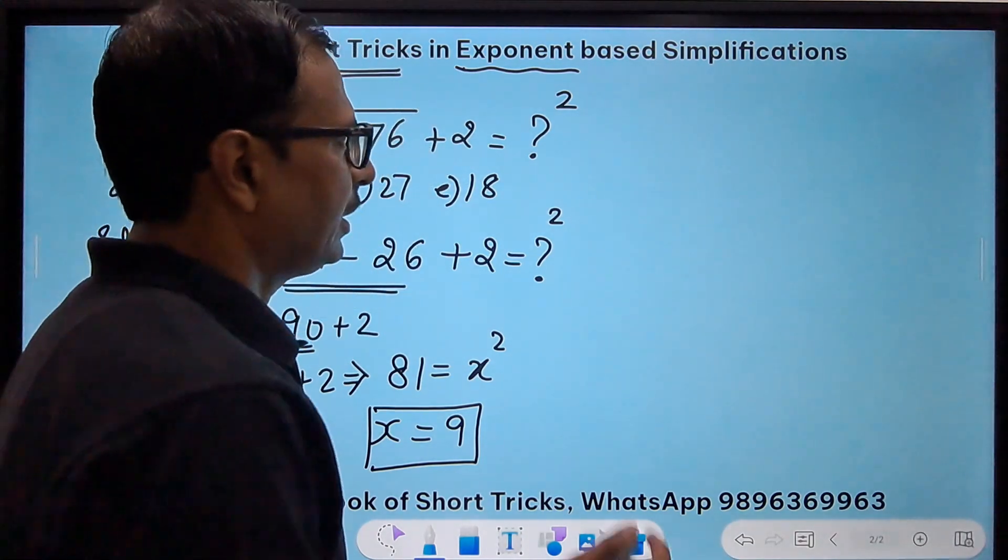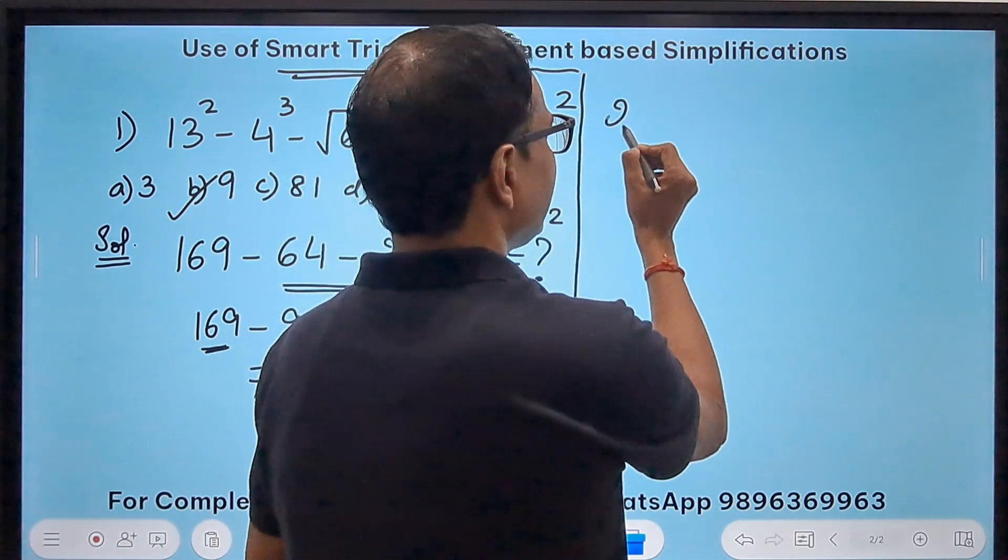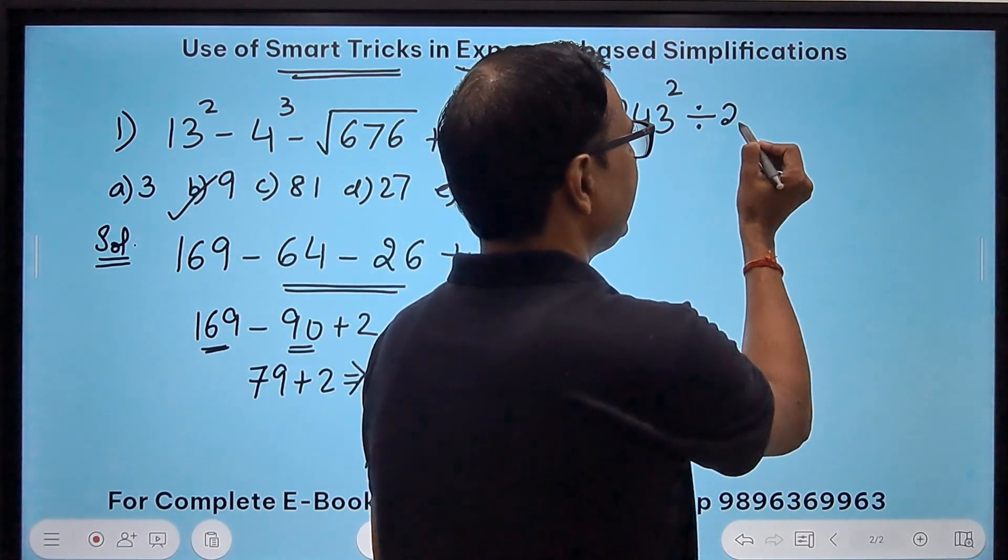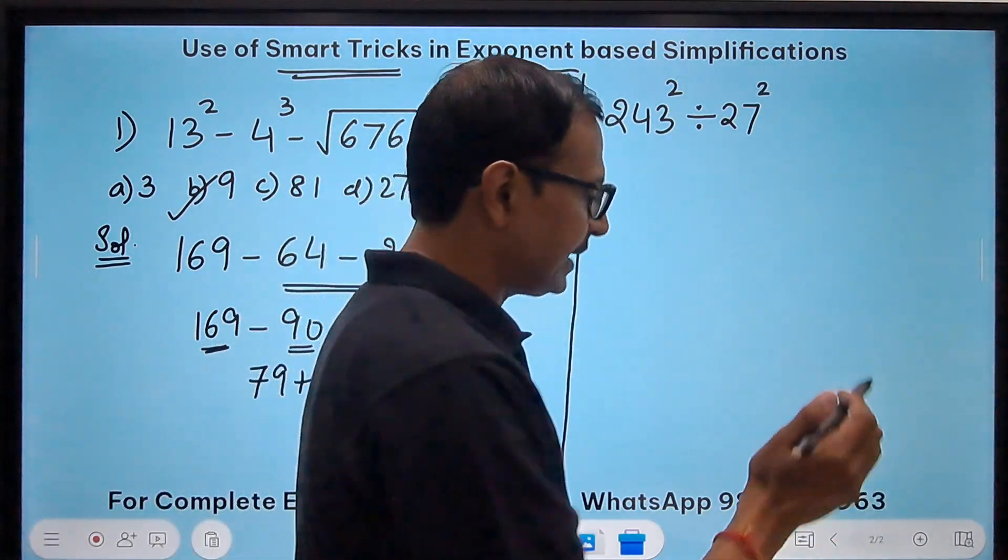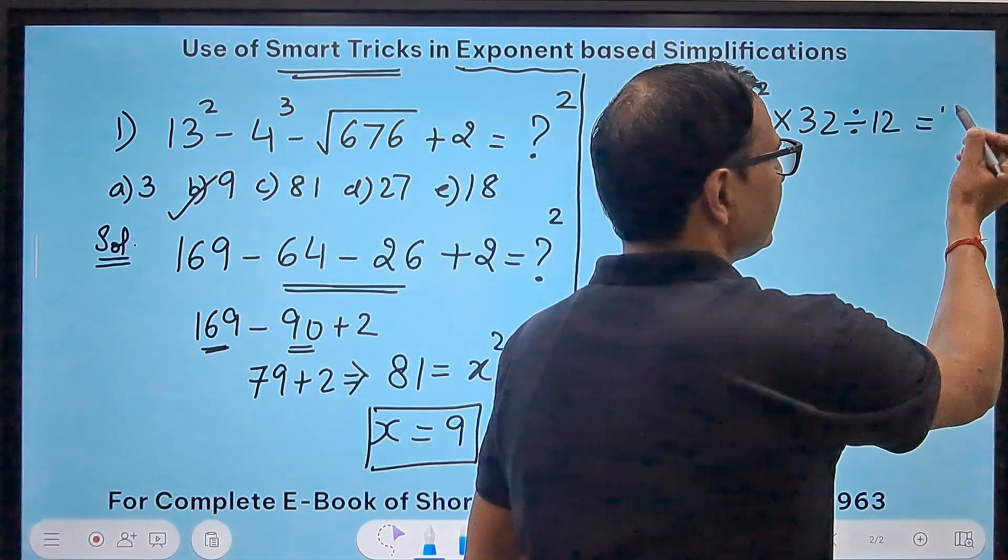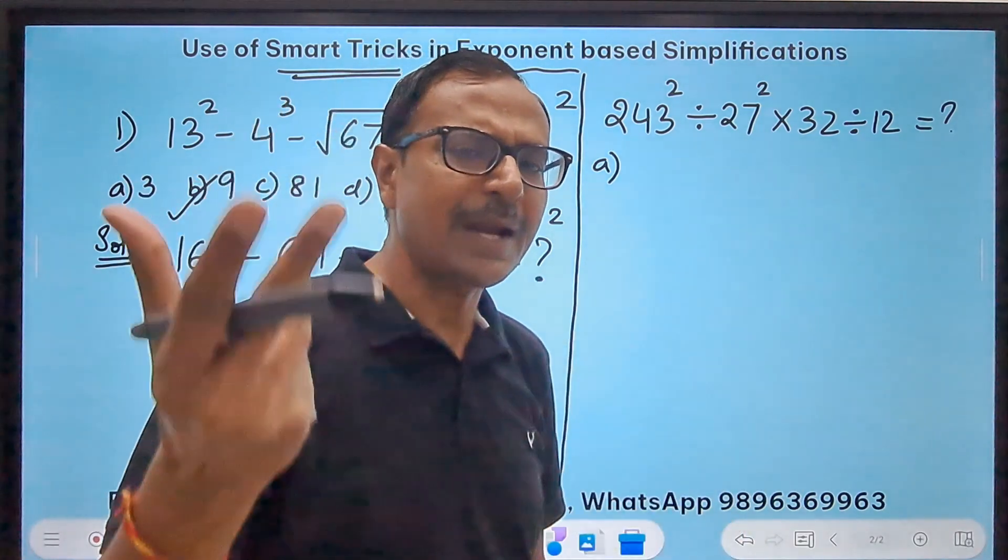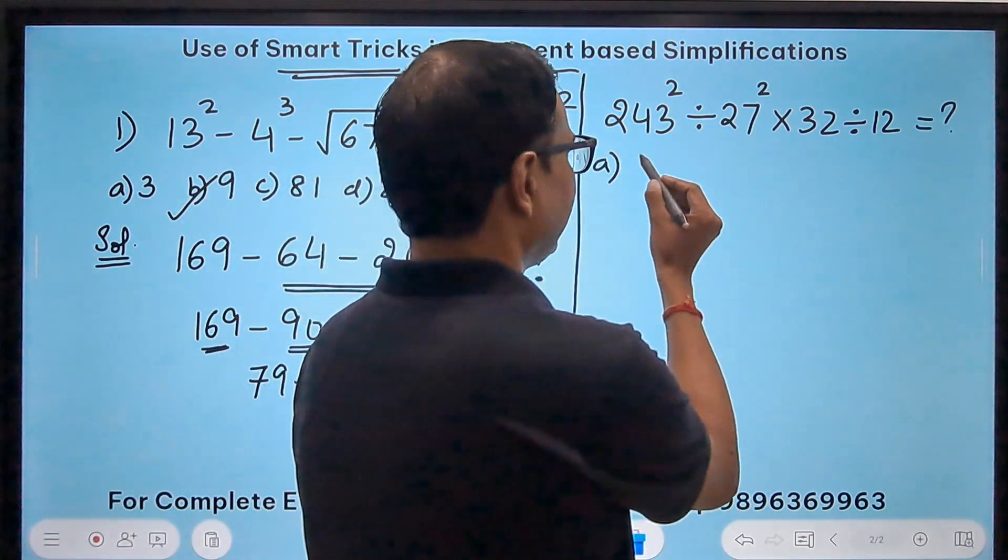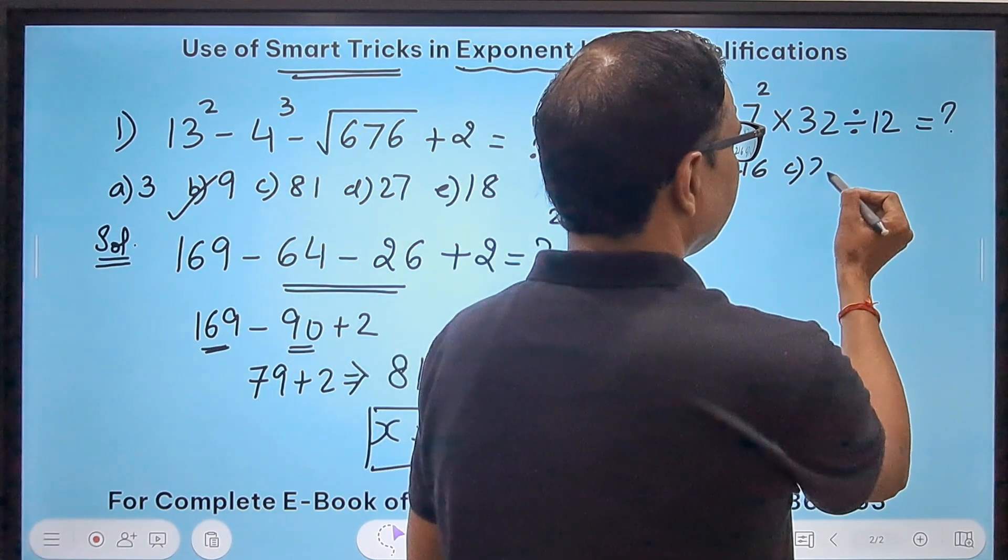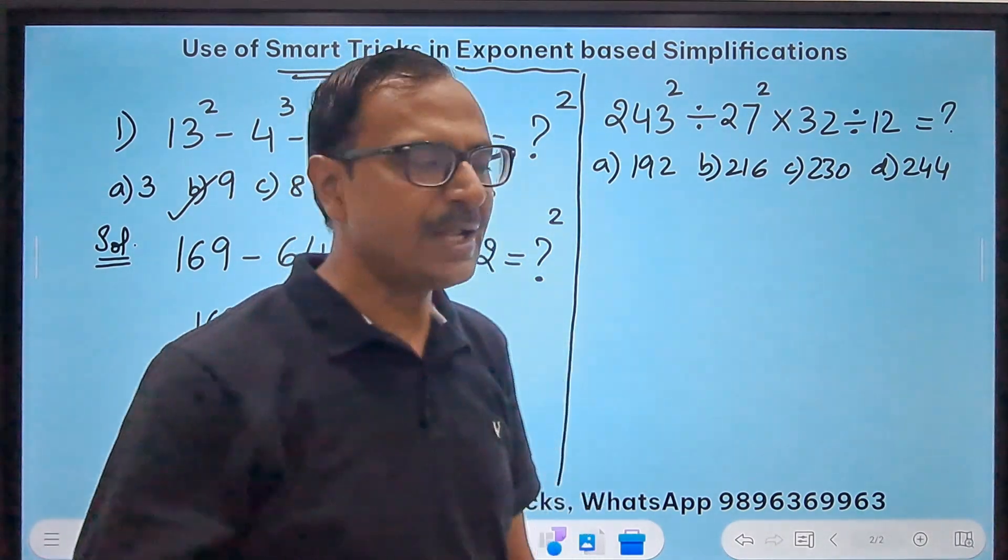Let's take another question, very similar to the first one but involving a little bit higher value this time. So suppose we have 243² divided by 27² and then times 32 divided by 12. So we need to find the value of this expression and I'll give you the options also so that if you want to try it you can pause the video after I give the options, try it yourself and then play the video. So 192 is option a, 216 is option b, then we have 230 and 244. These are the four options which are given as choices.